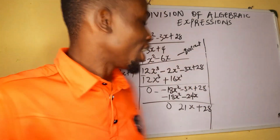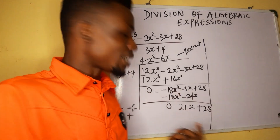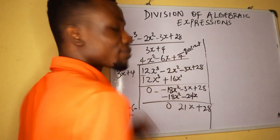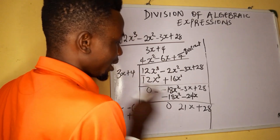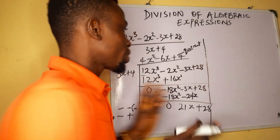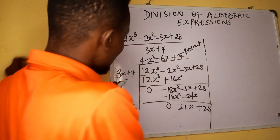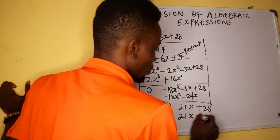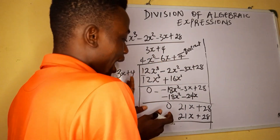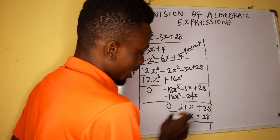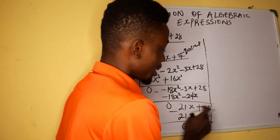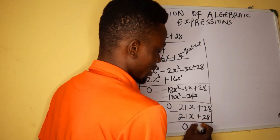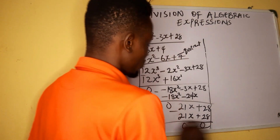We aren't done yet. Divide again: 3x divided by 21x — 3 divides into 21 gives 7, and x divided by x cancels, so our next quotient term is 7. Multiply back: 7 times 3x gives 21x, and 7 times 4 gives 28. Then subtract: 21x minus 21x is 0, and 28 minus 28 is 0.